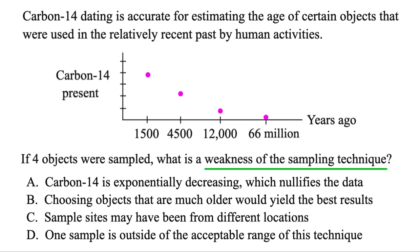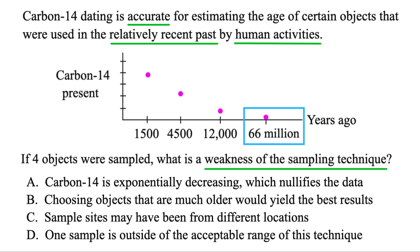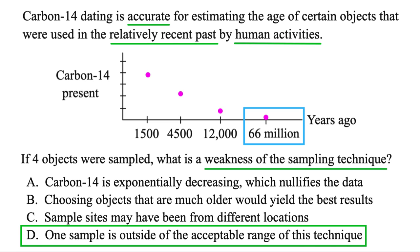This one's asking what is a weakness of the sampling technique. Carbon-14 dating is accurate for estimating the age of certain objects that were used in the relatively recent past by human activities. If four objects were sampled, what is the weakness? It's only accurate for estimating ages that are relatively recent and involved human activity. However, this data point — 66 million years ago — that was the age of the dinosaurs, so no humans were around back then. Carbon-14 dating is not going to be good for dating something that old, so that data point is no good. Answer D has that — one sample is outside the acceptable range for this technique. Just be careful of extreme highs or lows, as they may not be good to sample from.